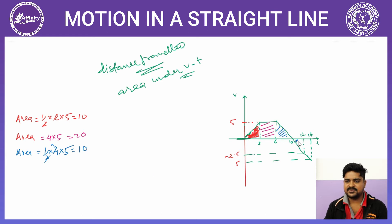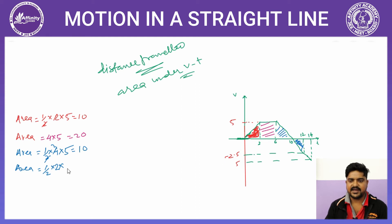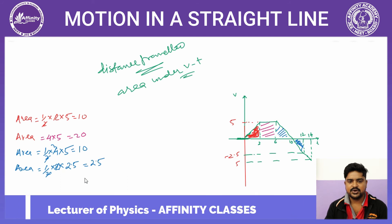अब नीचे की तरफ जो triangle है उसका area निकालना पड़ेगा। Area = half × base × height। Base कितना है? 12 - 10 = 2। Height 2.5 है — minus मत लिखिए, height negative नहीं होती। तो area = 1/2 × 2 × 2.5 = 2.5 हो जाएगा।